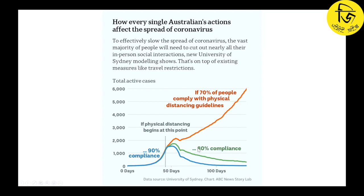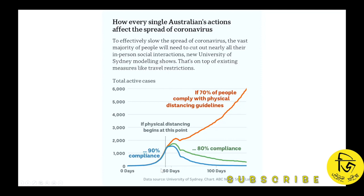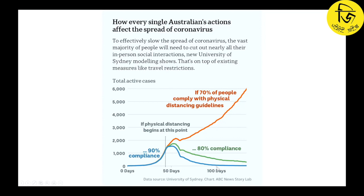The next key finding is about compliance levels. We need 70% compliance with physical distancing, and ideally 80% of people maintaining 2-metre distance. You can see that after 100 days, 80% compliance will flatten the curve. If we ensure 90% compliance, then after 100 days the curve will be even more effectively flattened. This is a useful modeling exercise.